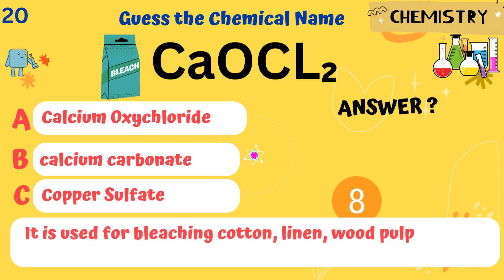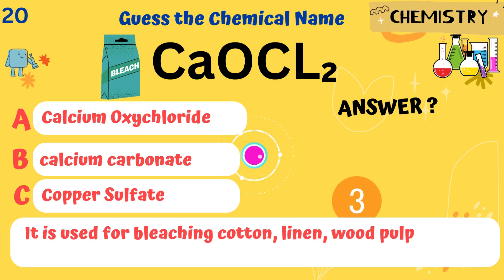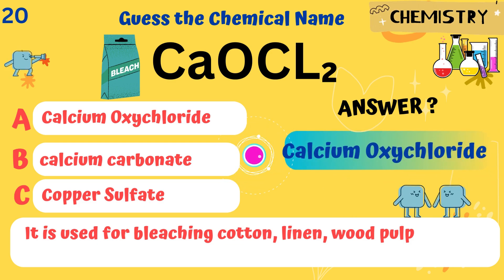CaOCl2. It is used for bleaching cotton, linen, and wood pulp. Answer: Calcium oxychloride.